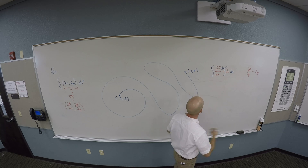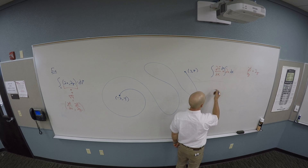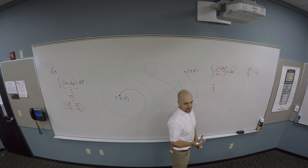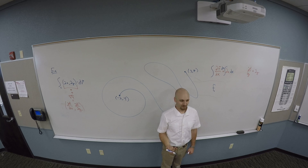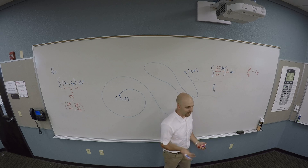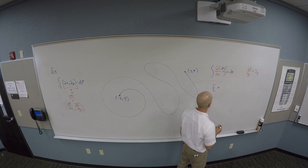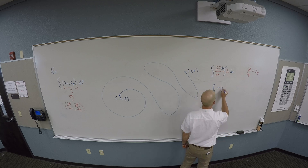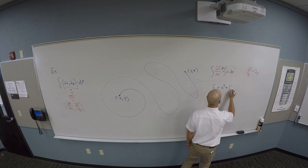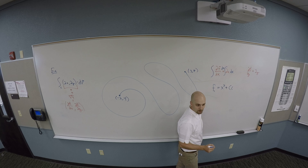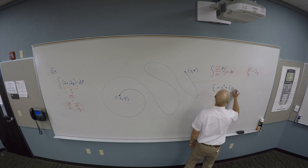The next thing I'm going to get is X squared. So my best guess for F right now is X squared plus C of Y — the constant can be a function of Y, not X, but the other variable.